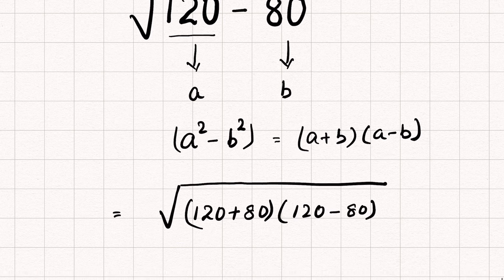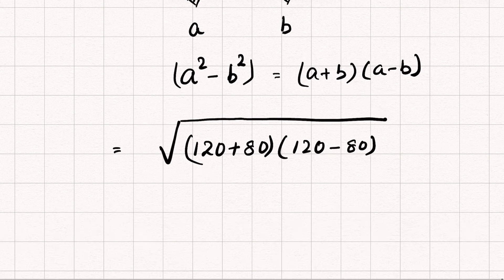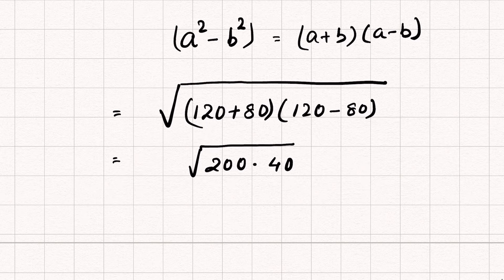120 + 80 is 200, and 120 - 80 is 40, so we have √(200 × 40). Now let's break it down: 200 = 100 × 2, and 40 = 4 × 5 × 2, all under the square root.